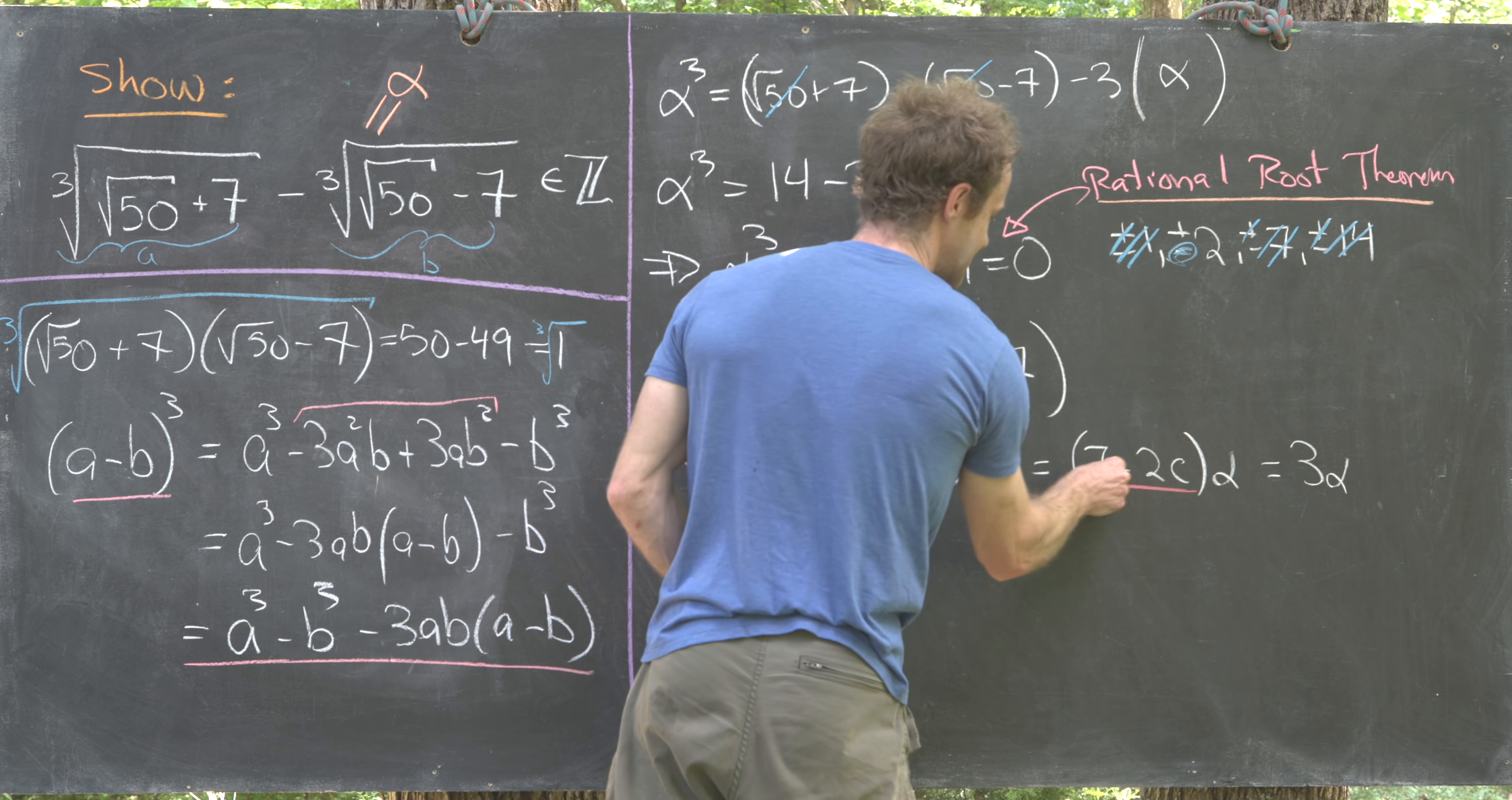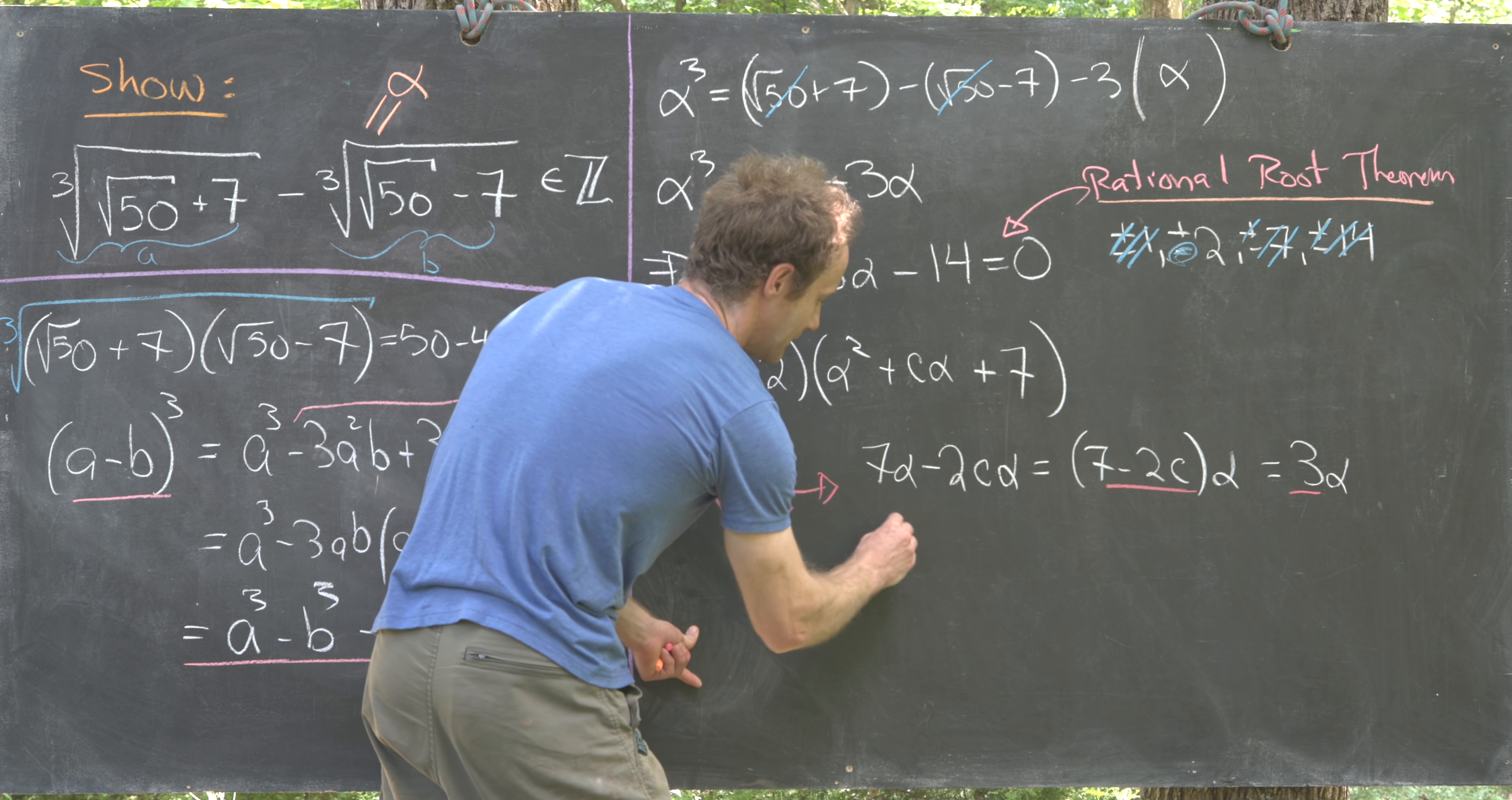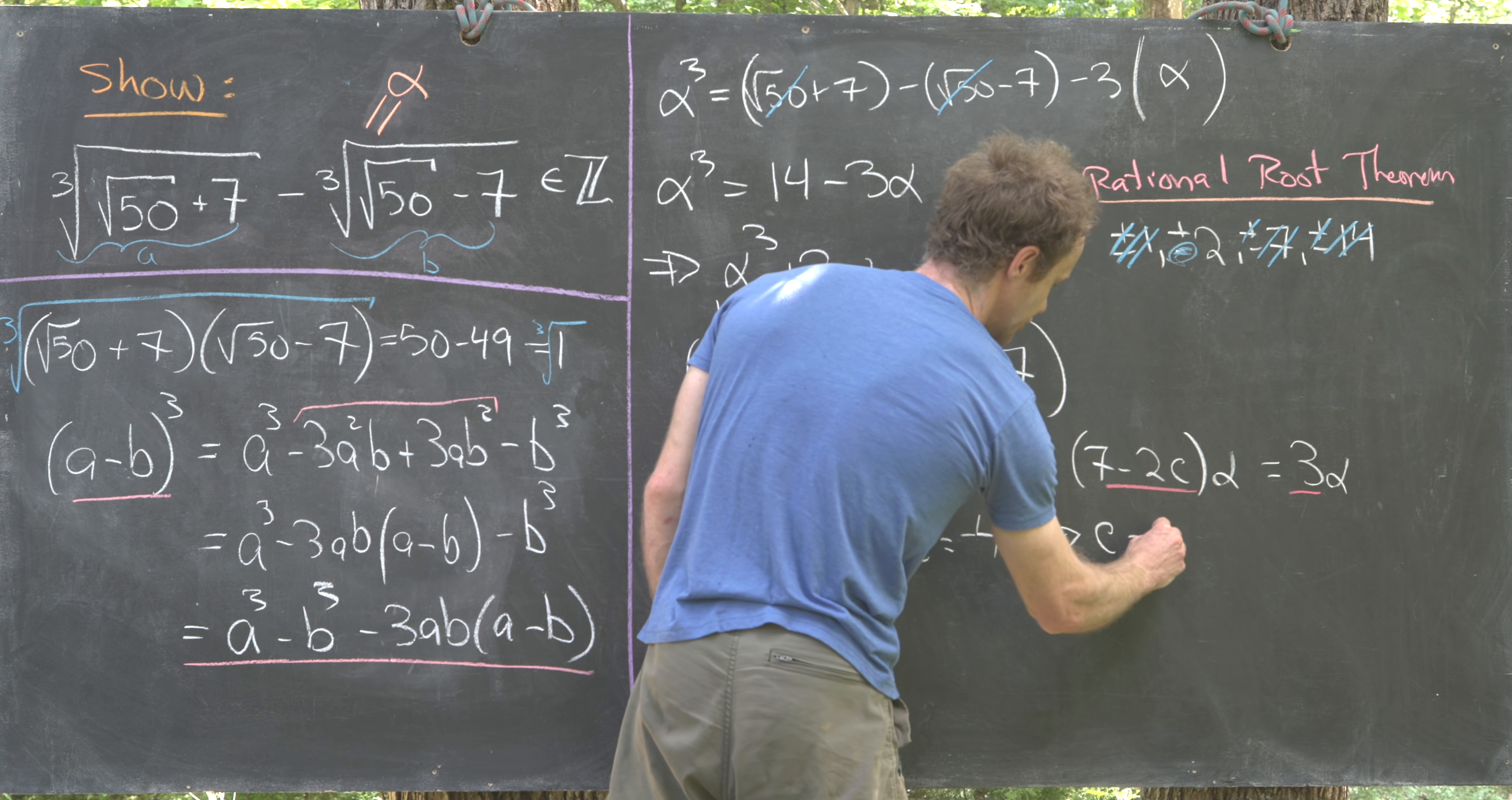In other words, we have 7 minus 2c must be equal to 3. That means that minus 2c needs to be equal to negative 4, in other words c must be equal to 2.